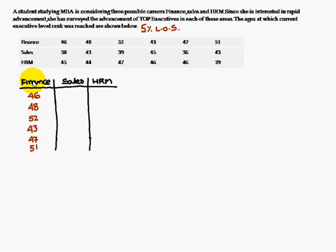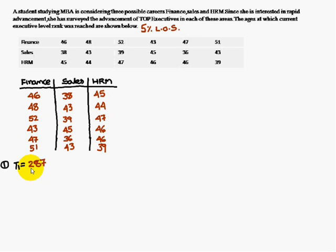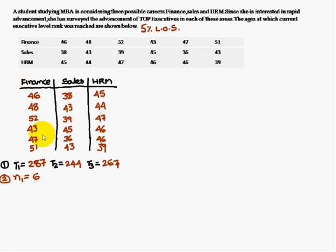First, we write finance, sales, and HRM in three column-wise entries and fill up the data. The summation of the finance column is 287, treated as T1. The summation of the sales column, treated as T2, is 244. Similarly, the summation of the HRM column, treated as T3, is 267.